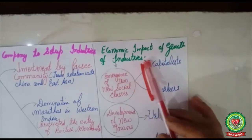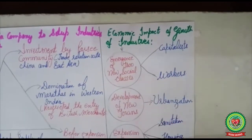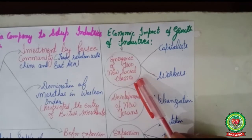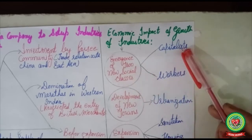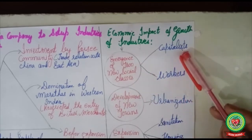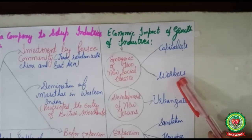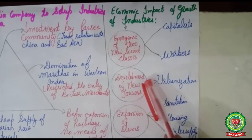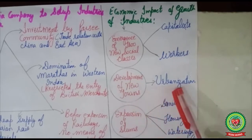Now we will discuss the economic impact of the growth of industries. Modern industries were set up in India and affected the Indian economy. First was the emergence of new social classes. Before industrialization, there were only two social classes: zamindars and peasants. With industrialization, two new social classes emerged — capitalists, meaning persons who invest to earn profit, and workers, meaning laborers working in the factories. There was also development of new towns, as industries had to be set up in the outskirts of big cities, leading to urbanization as people from rural areas came in search of jobs.